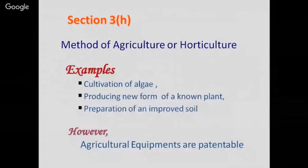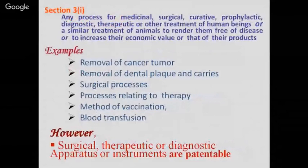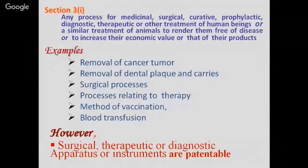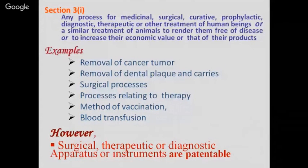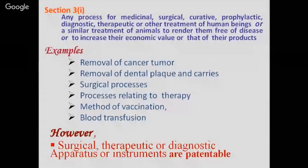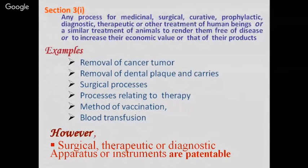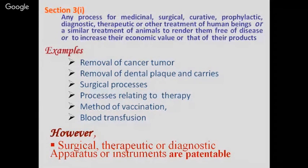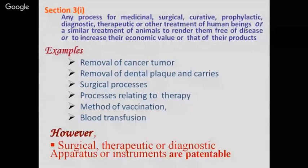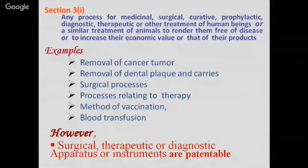Under Section 3(i), processes for medicinal, surgical, curative, prophylactic, diagnostic, therapeutic, or other treatment of human beings or similar treatment of animals to render them free of disease or to increase their economic value are not patentable. Examples include removal of cancer tumors, removal of dental plaque and caries, surgical processes related to therapy, method of vaccination, and blood transfusion. However, surgical, therapeutical, or diagnostic apparatus and instruments are patentable.